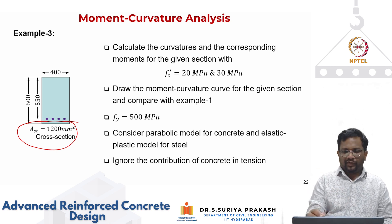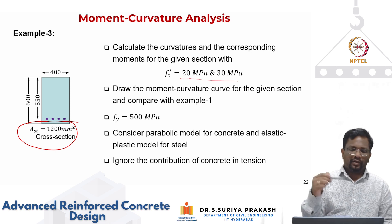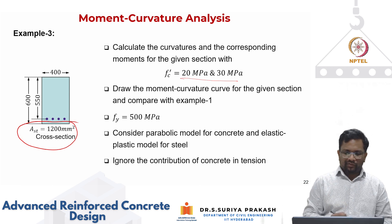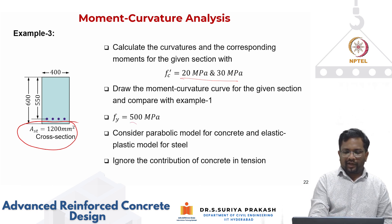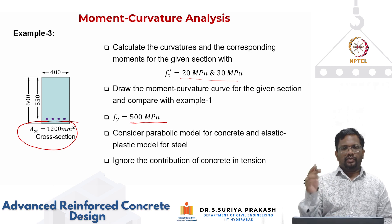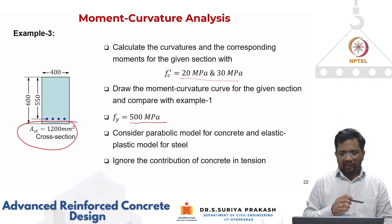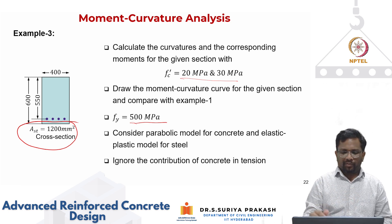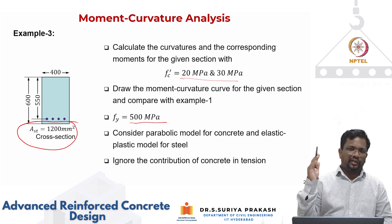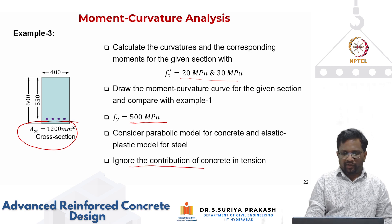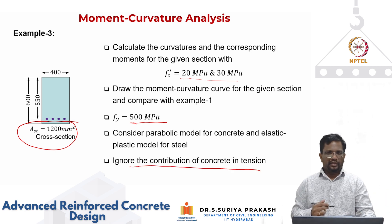For such a very low tension reinforcement ratio, if we start changing the concrete strength, what happens to the moment-curvature? That is what we are going to do in this third example. The grade of steel is kept the same for comparison — 500 MPa — and we are going to use the parabolic model for concrete in compression, which is valid up to a cylinder compressive strength of 40 MPa. We will ignore the contribution of concrete in tension.